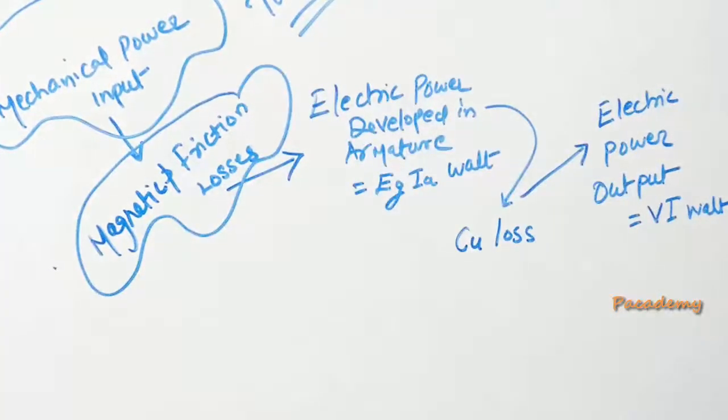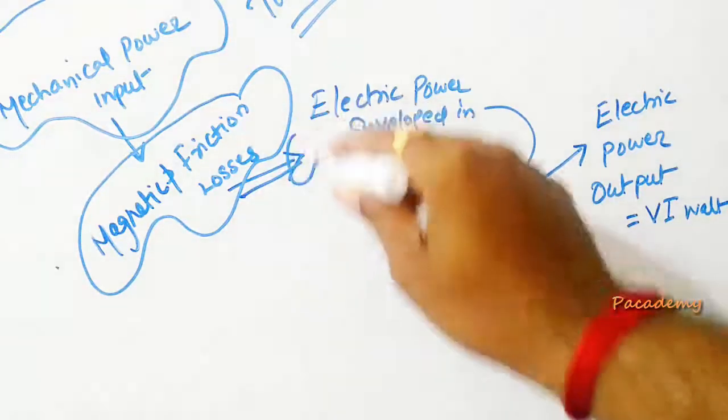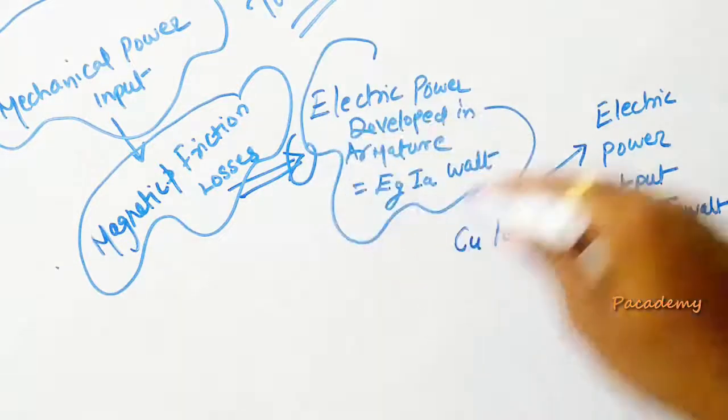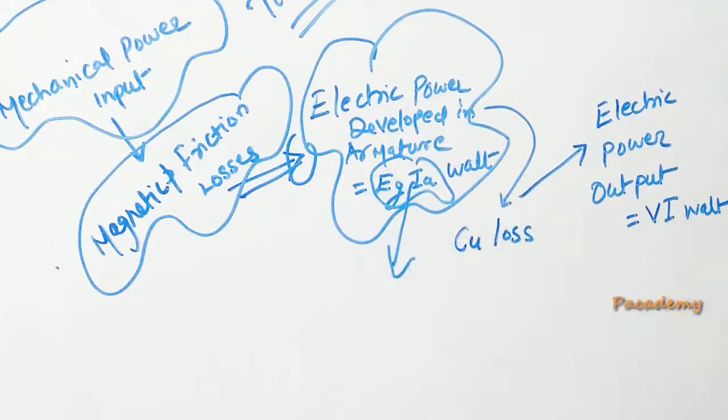As the shaft of the generator rotates, there occur magnetic and friction losses which the generator has to undergo. After the magnetic and friction losses, the electric power is developed in the generator which is given by EGIA. IA is the current which flows in the armature windings.